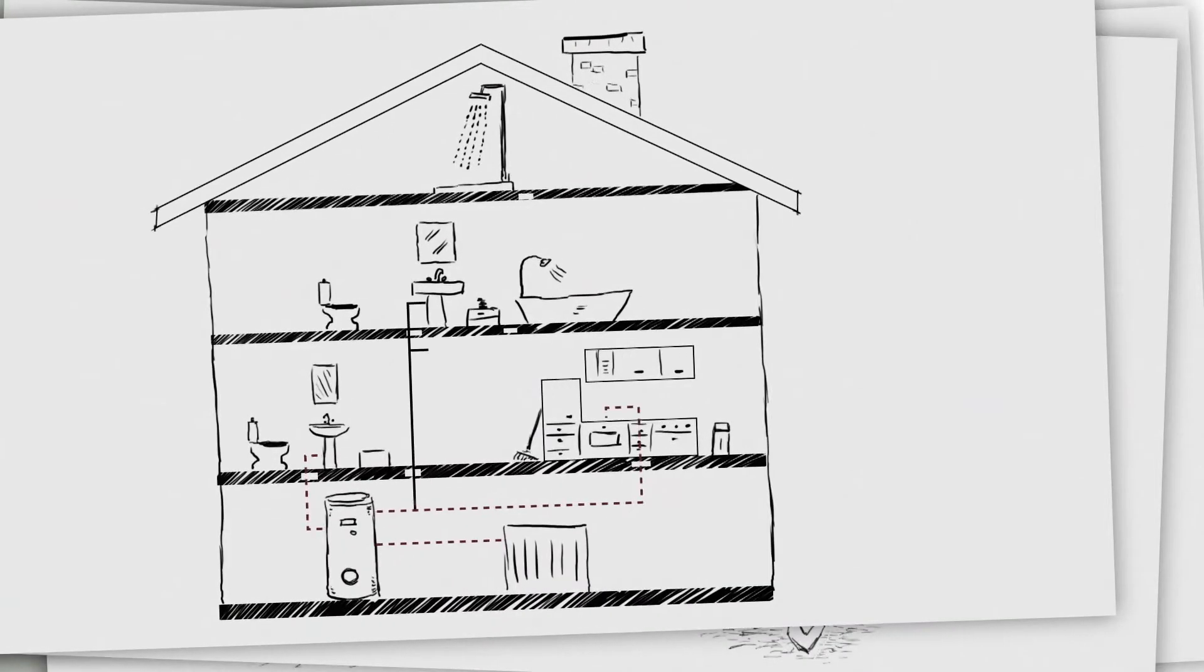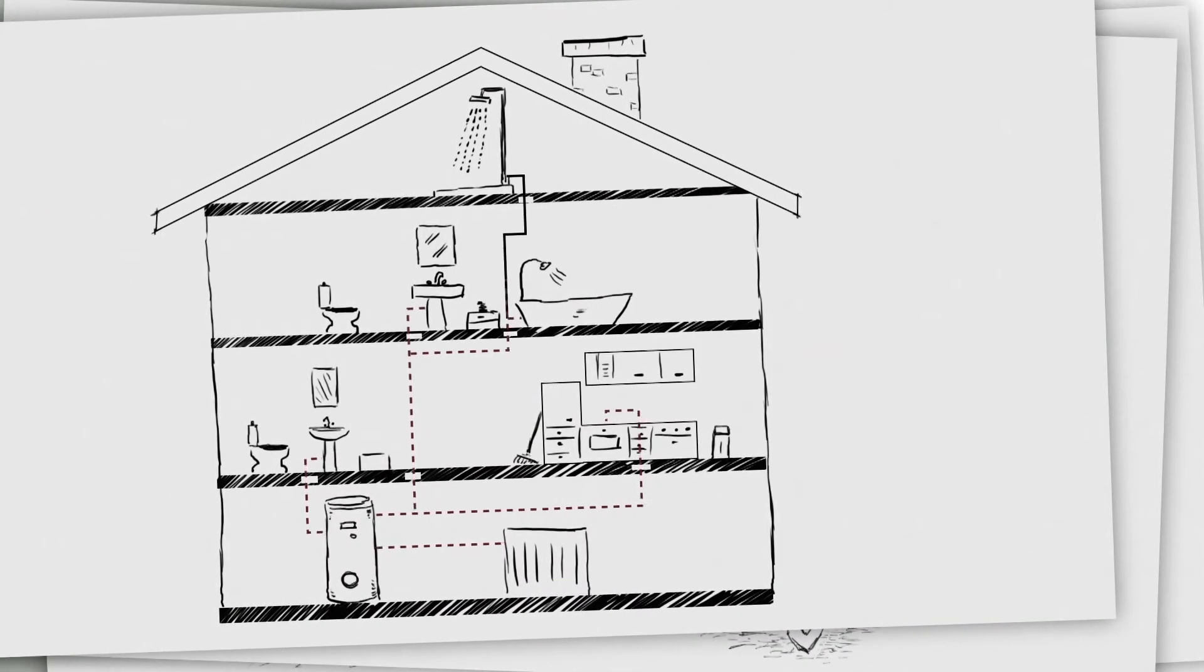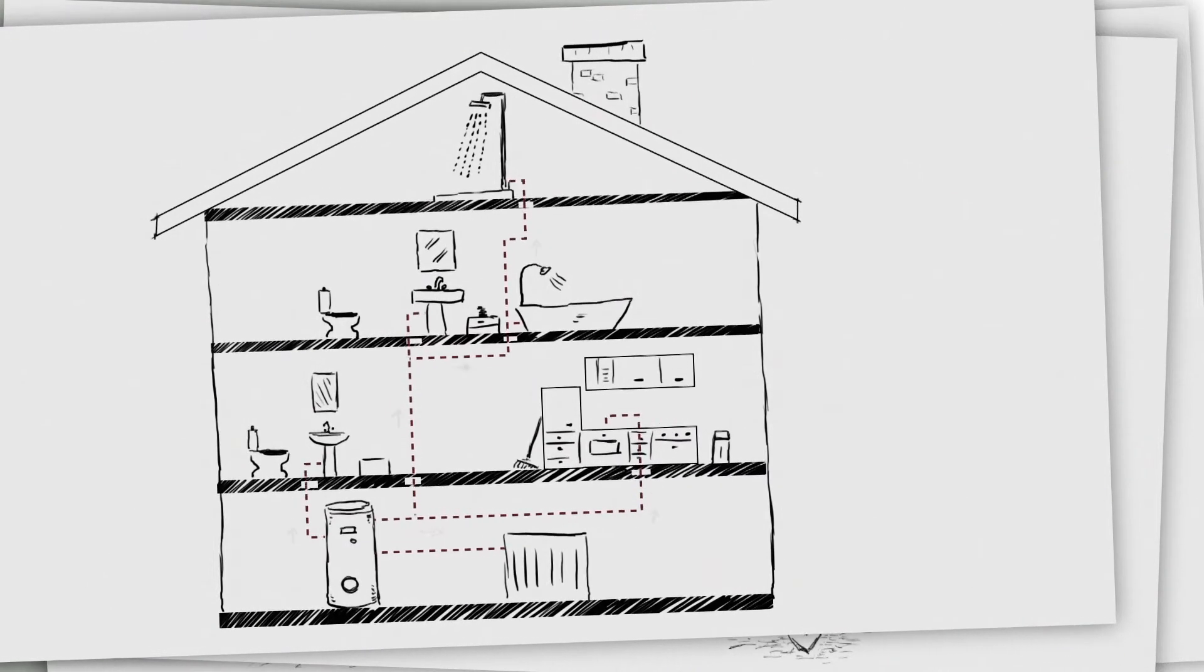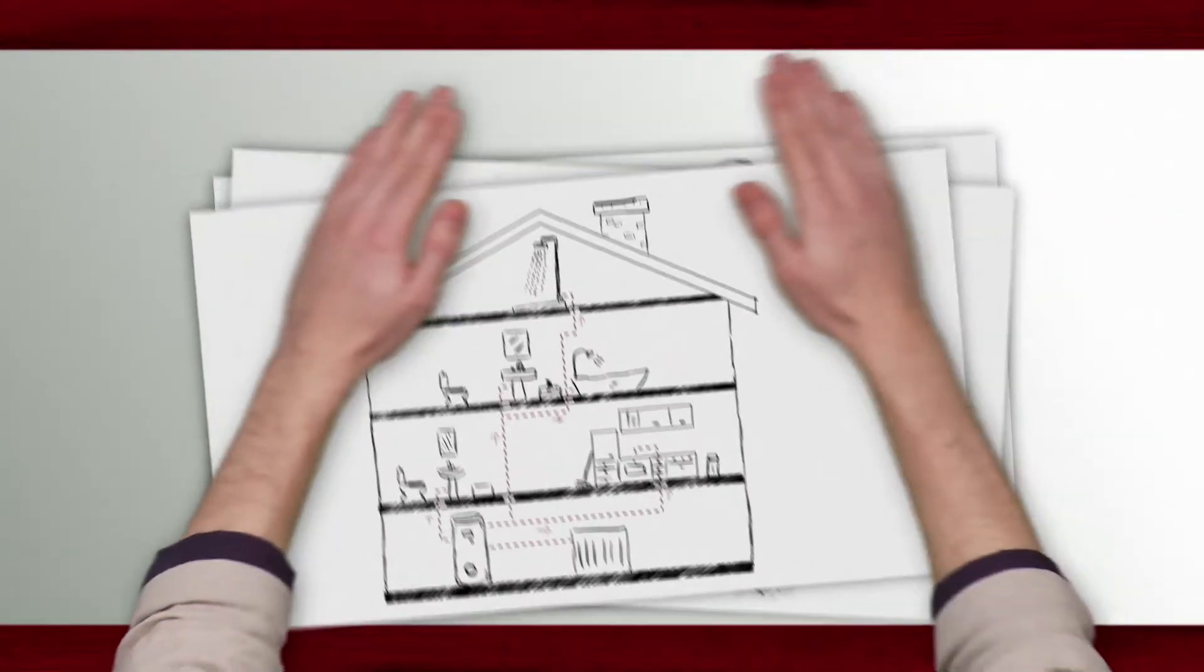Yet it's really quite simple to prevent all these cylinder, circulation, distribution and start-up losses, no matter whether you live in a detached house or an apartment building.